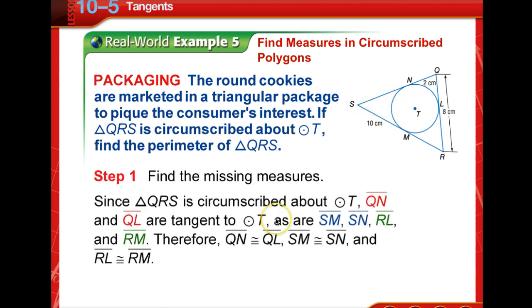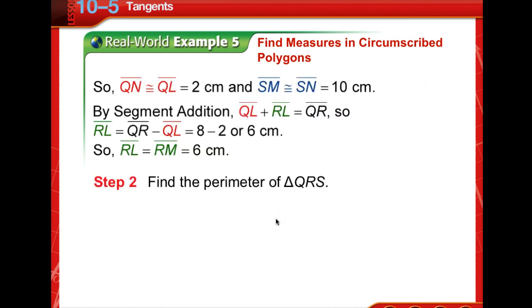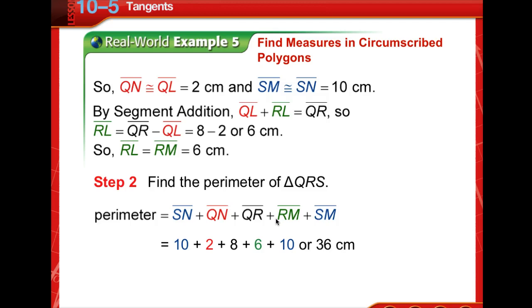So I just went over what they're saying right here, but all we have to do is add all those measures together and we get 36 centimeters. So the perimeter of triangle QRS is 36 centimeters.